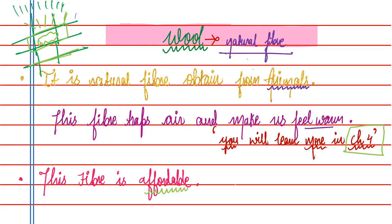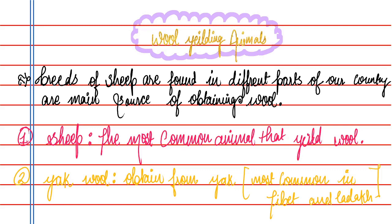Wool is more affordable than silk. A pure silk saree can cost around 15,000 rupees, whereas pure wool costs around 1,000 rupees. Synthetic fiber from petrochemicals is even cheaper, which you will study in class 8. Next, let us come to wool-yielding animals. Today we will study wool, and in the next part we will study silk.